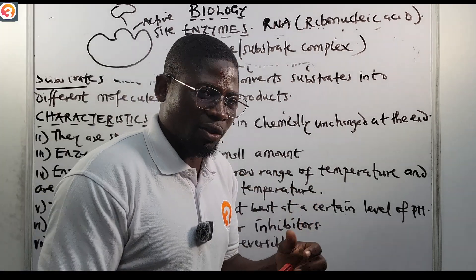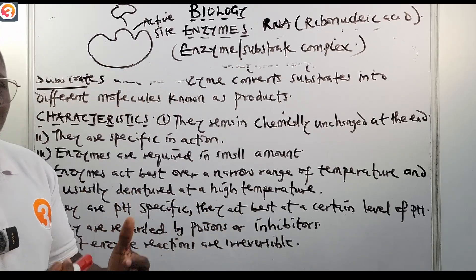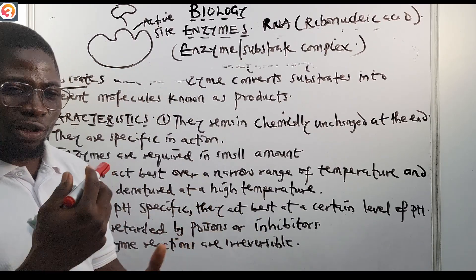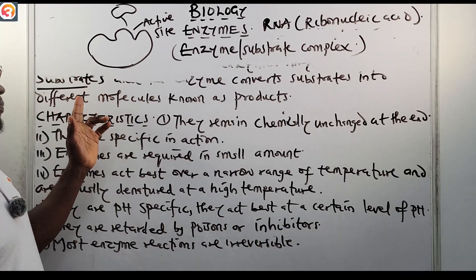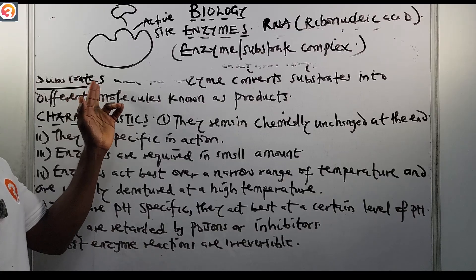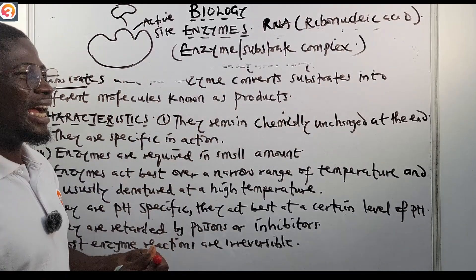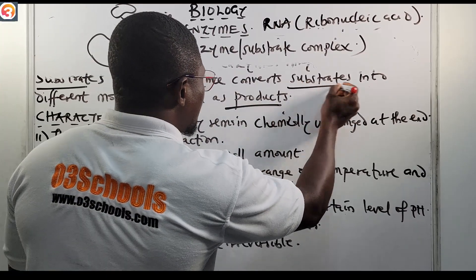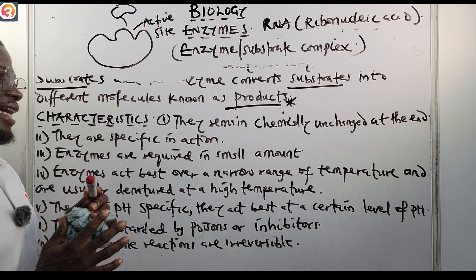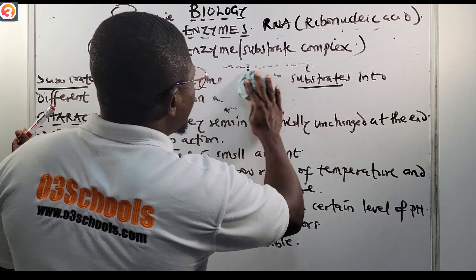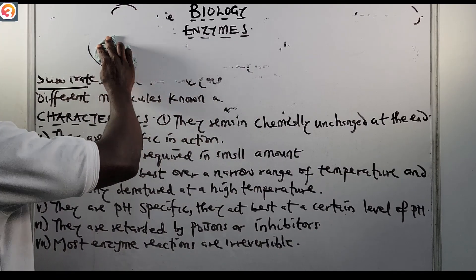So to summarize: enzymes are biological catalysts that speed up chemical reactions by lowering the reaction's activation energy, modifying substances known as substrates, and converting those substrates into products. The substance being modified is called the substrate, and what it is converted into is called the product. Now let us talk about the characteristics of enzymes.